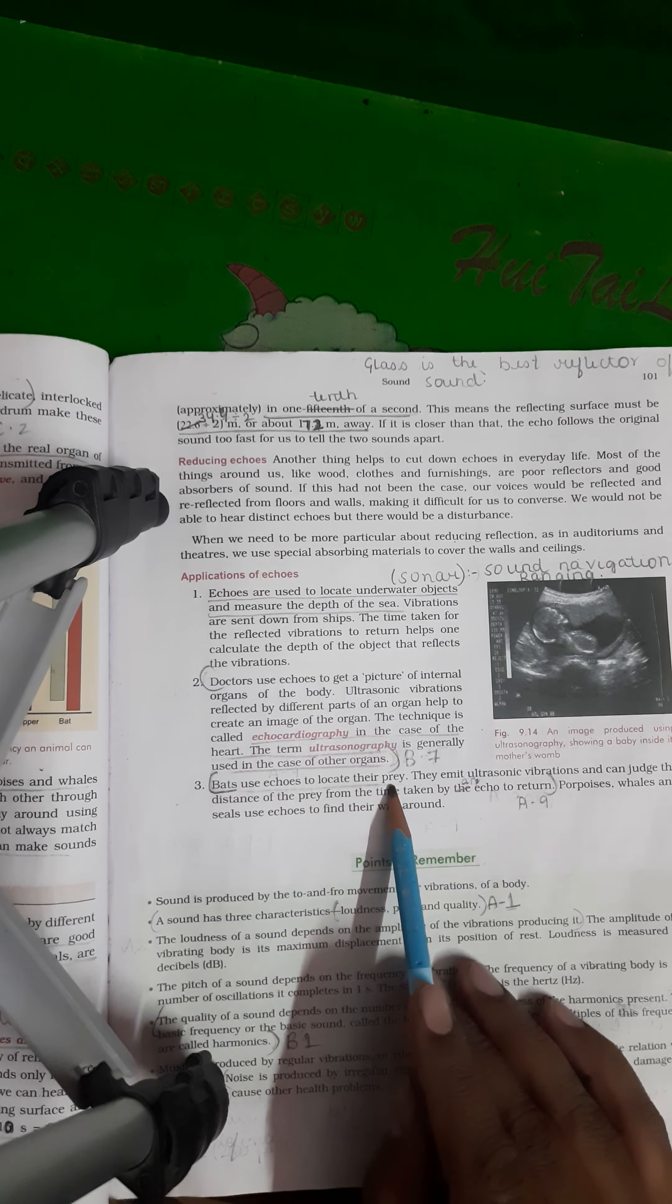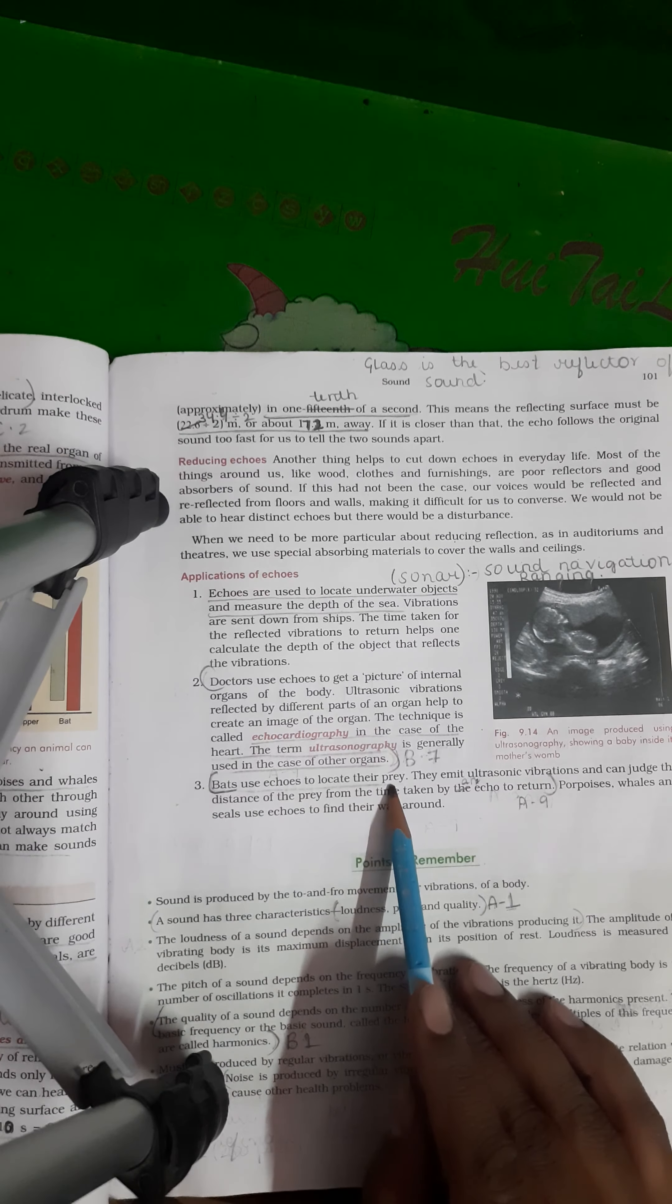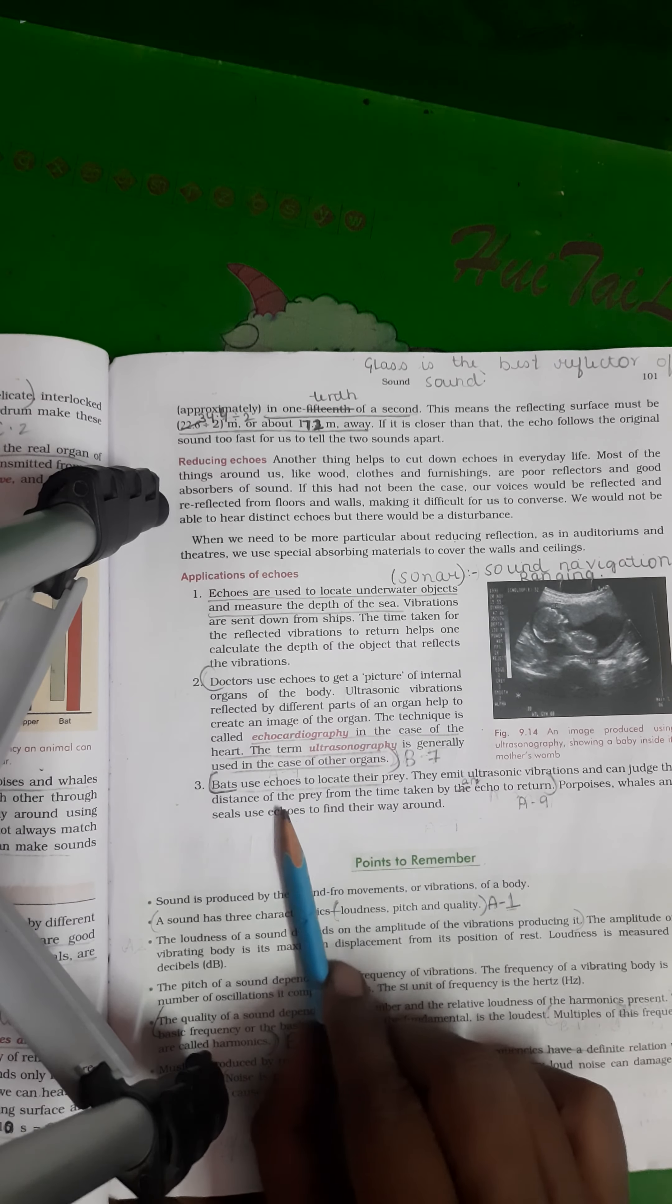What they do? Bats use to release the ultrasonic vibration. And this ultrasonic vibration, it will hit the prey and comes back. And with the help of it, the bat is able to calculate the distance of prey from him.